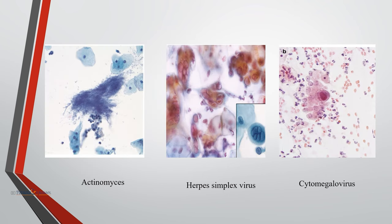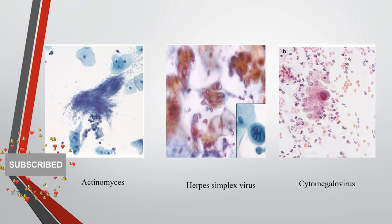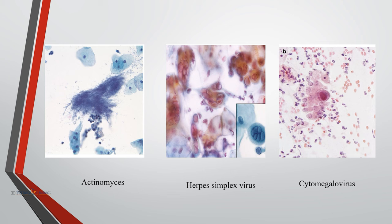In Actinomyces infection, organisms appear tangled in clumps of filamentous organisms as a cotton ball on low power, or woolly ball, due to radial distribution of filaments. They can be seen in the presence of IUCD. In herpes simplex virus infection, the nuclei have a ground-glass appearance due to the presence of intranuclear viral particles. Eosinophilic intranuclear inclusions called Cowdry bodies can be seen, and multinucleated epithelial cells with molded nuclei can also be seen.